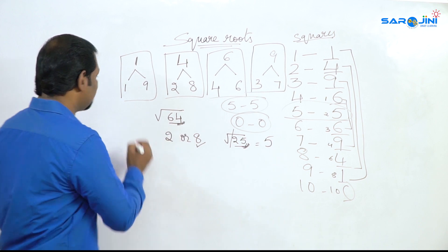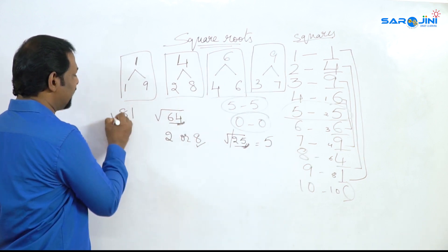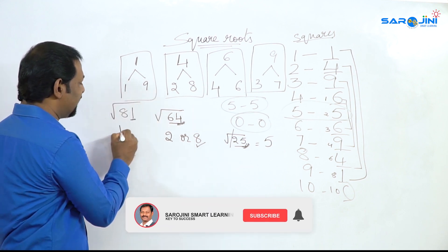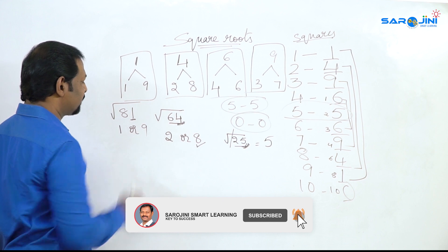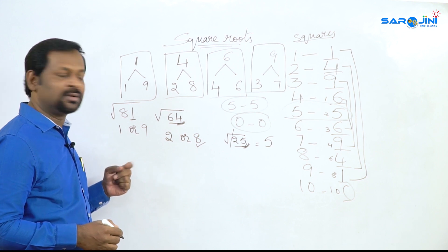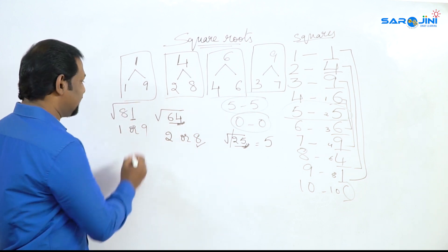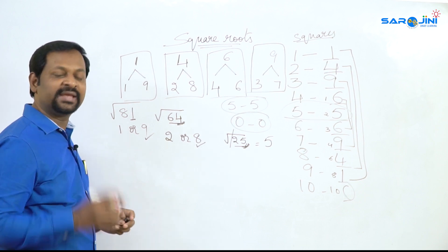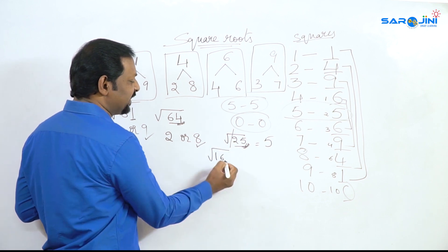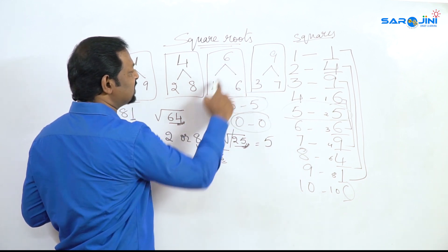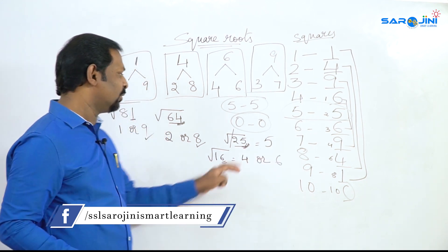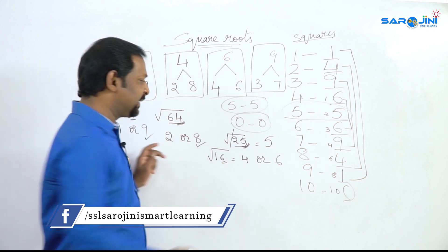Let's check: the square root of 81. The unit digit is 1. The combination of 1 is 1 and 9. And 9 times 9 is 81 — that's why the answer is 9. Let's check: root 16. The unit digit is 6. The combination of 6 is 4 and 6. 4 into 4 is 16 — that's why 4 is the answer.